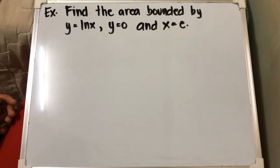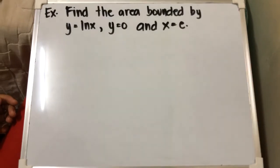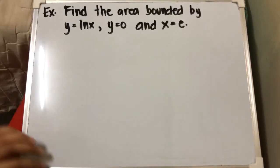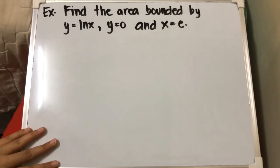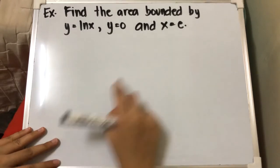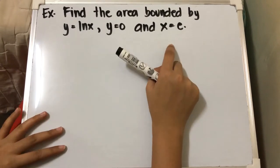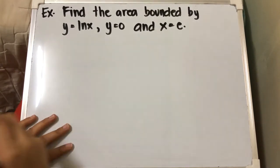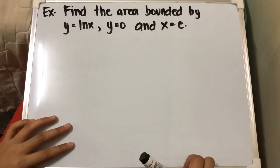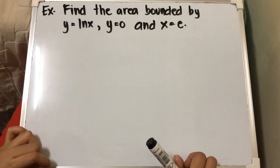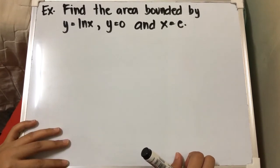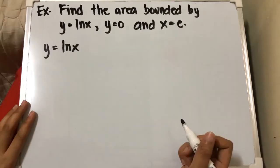We have here an example: find the area bounded by y equals ln x, y equals 0, and x equals e. The first thing we need to do in solving this kind of problem is to plot our graph.